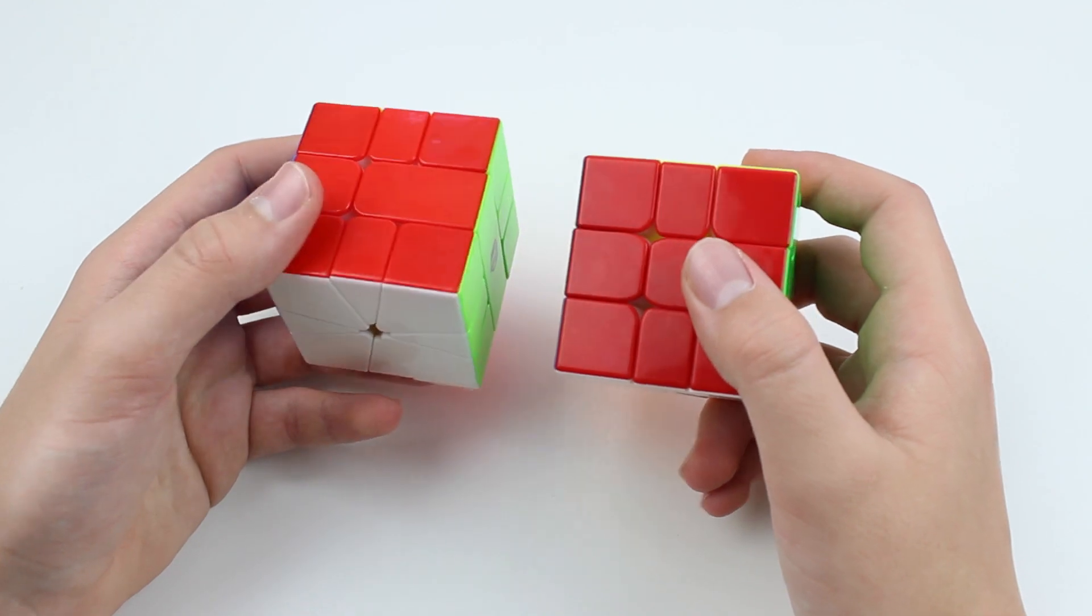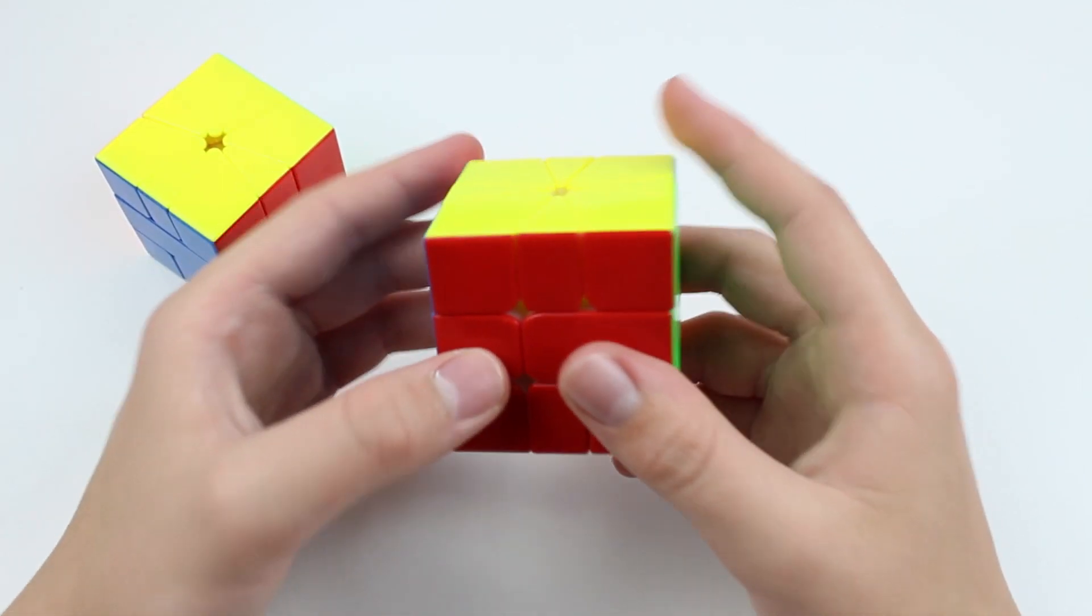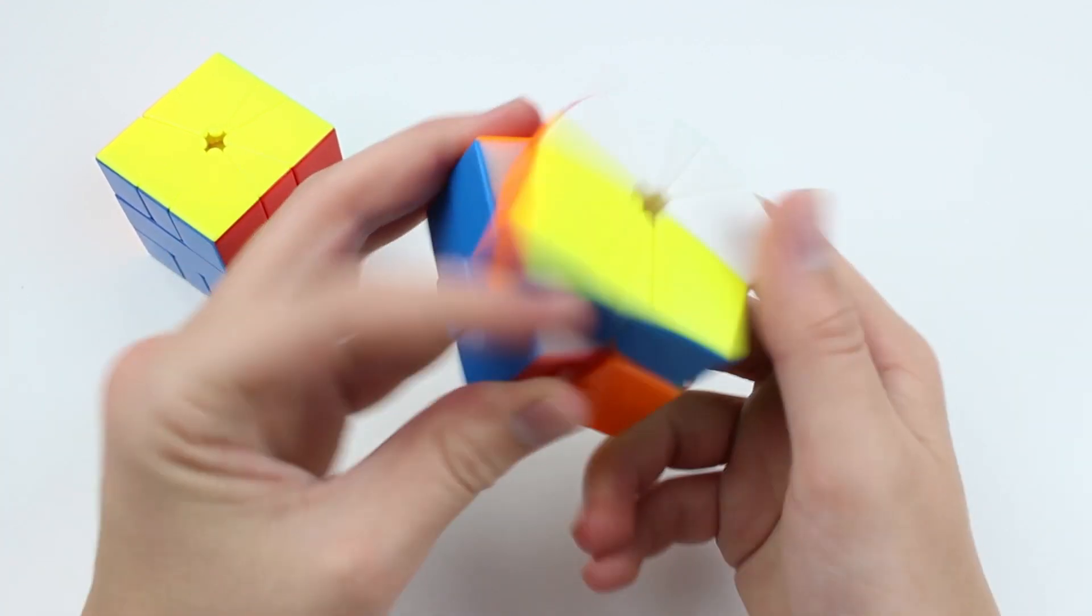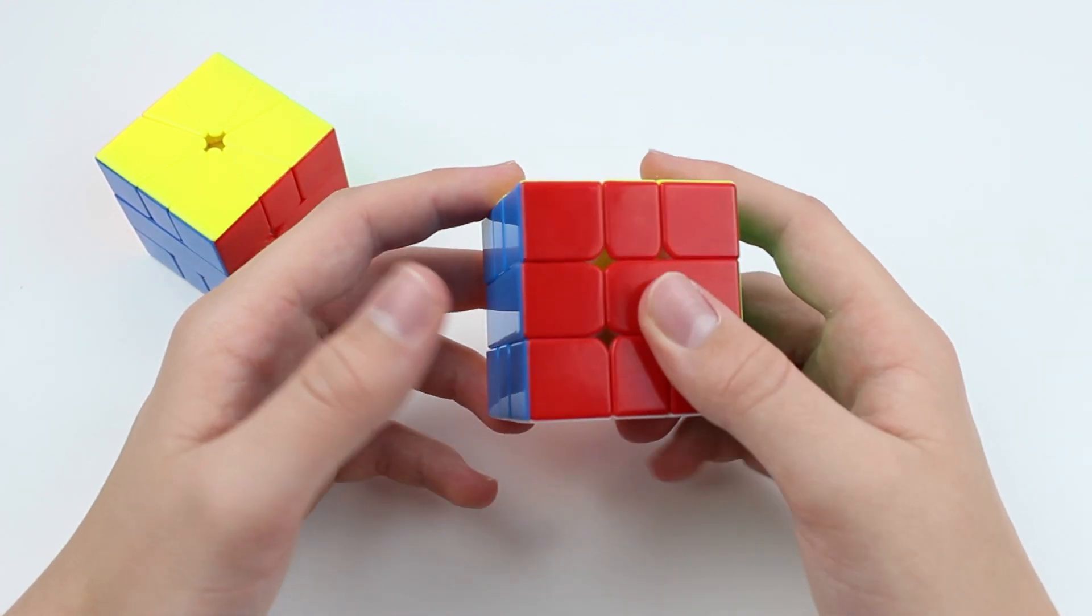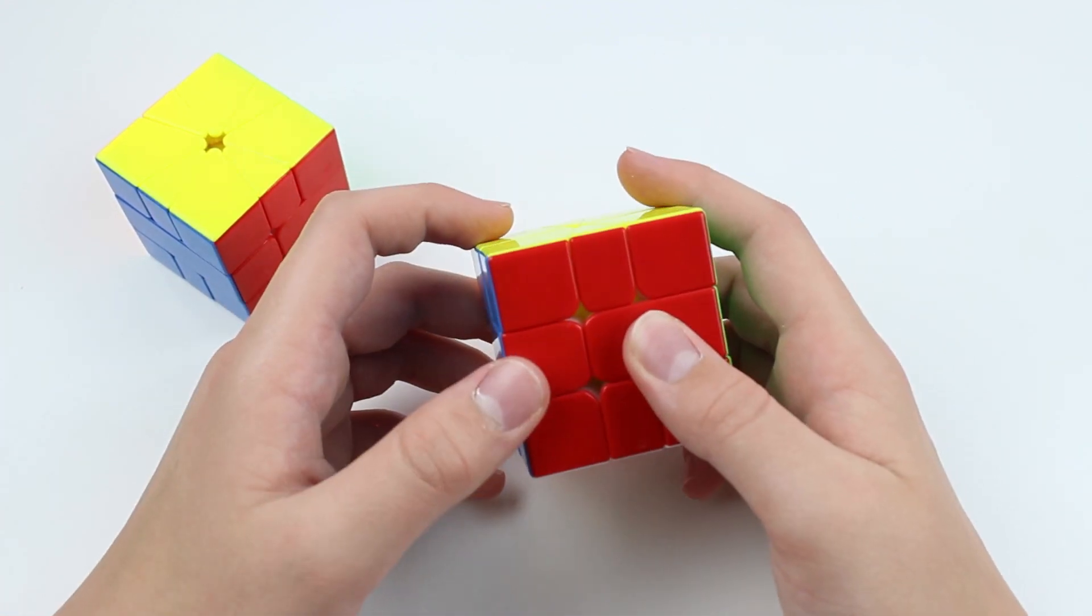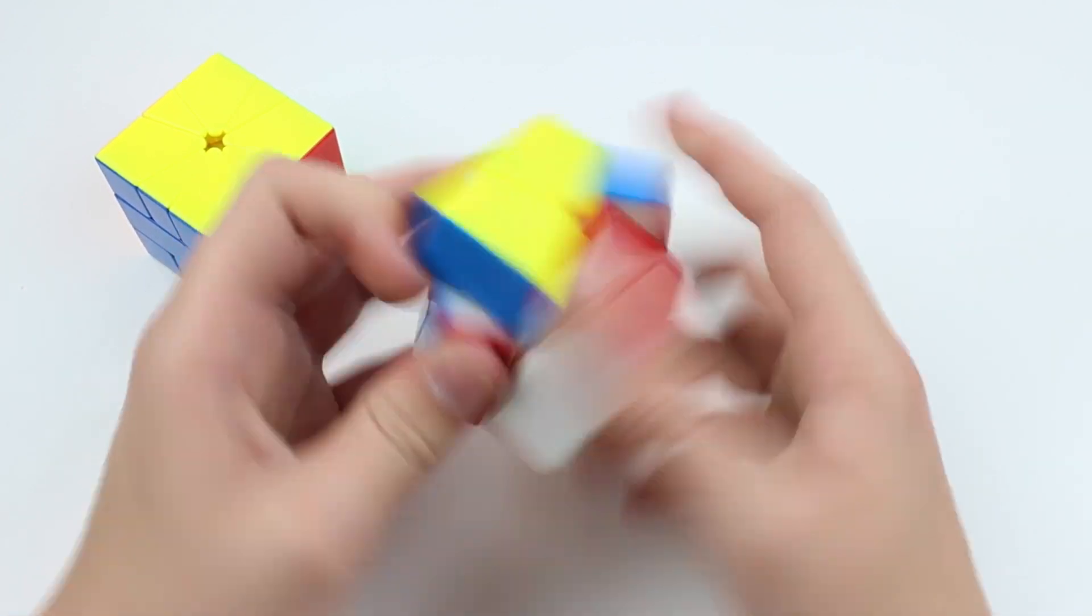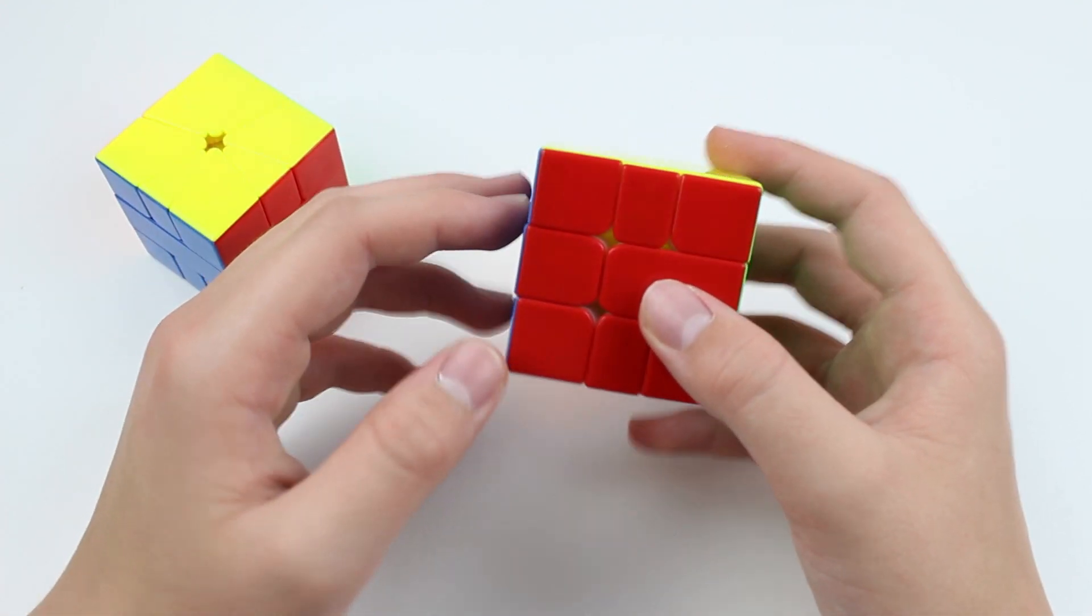Both cubes are quite good. Overall, I would recommend the Little Magic M square one, simply because this cube is so good in terms of price range. And if your turning is fairly accurate on square one, the magnets also make a nice addition which will help with that too, then it's a very good square one for you.